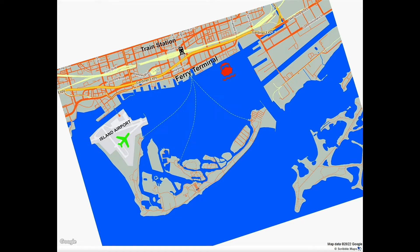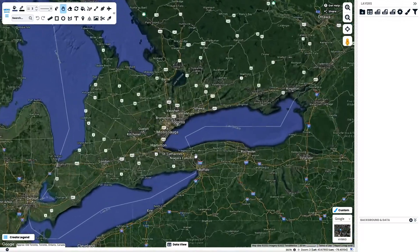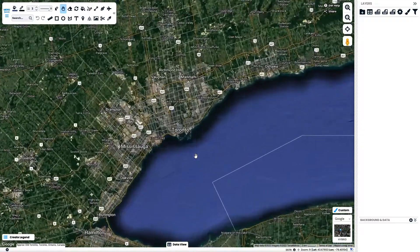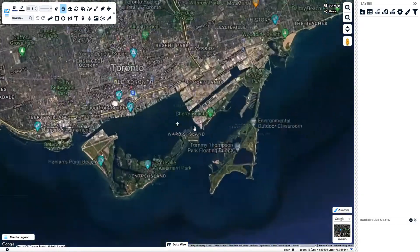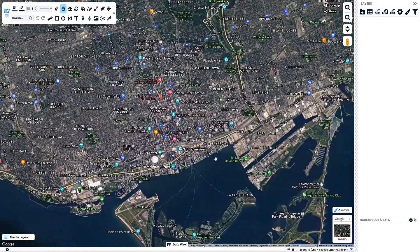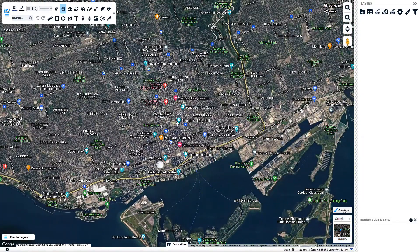Hi, I'm Mike with Scribble Maps and today I'm going to show you how to stylize and create a custom base map. To start off, I'm going to go into the bottom right hand corner and choose Custom to customize our base map.